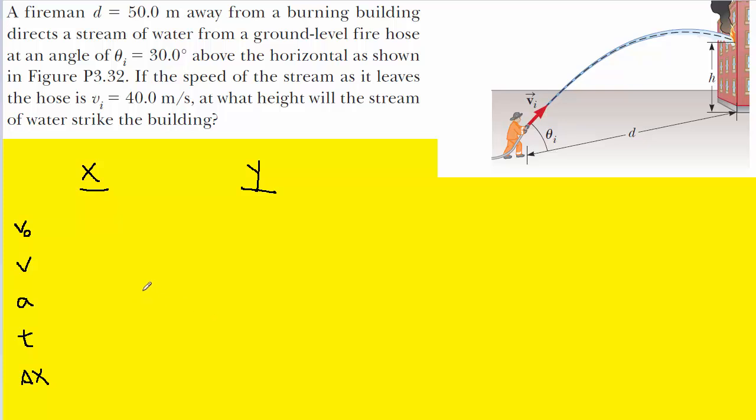The next thing to do is to fill in all the given information. The question states that the initial velocity is 40 meters per second, but because this is in two dimensions we're going to have to break that into x and y components. The initial velocity in the x direction is 40 cosine of the given angle, which in this problem is 30 degrees. The initial velocity in the y direction is 40 sine of 30 degrees.